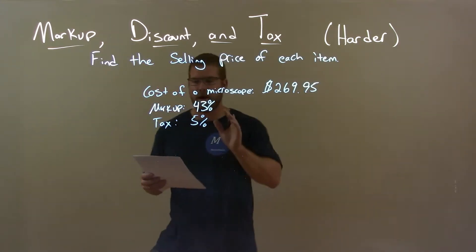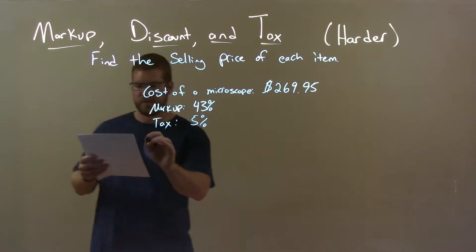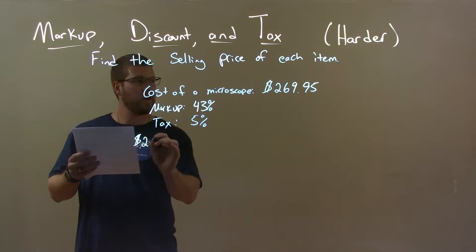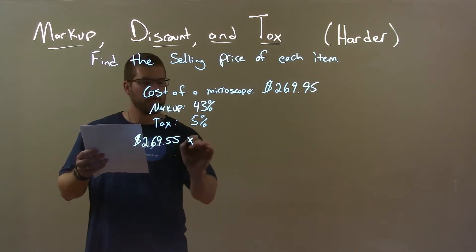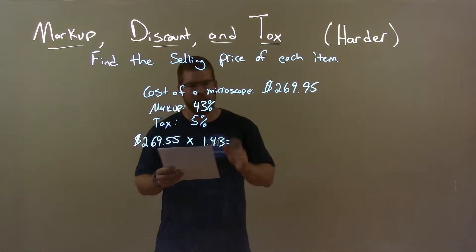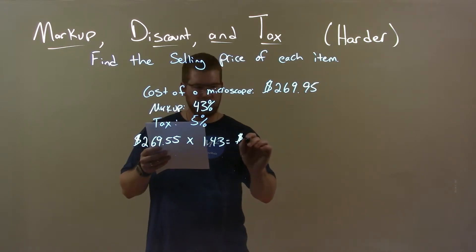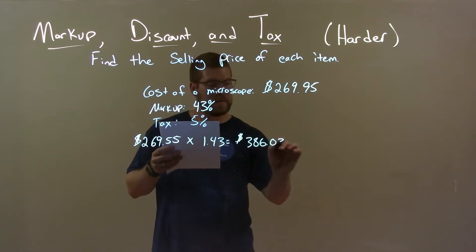Well, what I want to do now is start with the initial cost, that $269.95, and I'm going to multiply that by 1.43. That represents a 43% markup. This gives us an answer of $386.03.